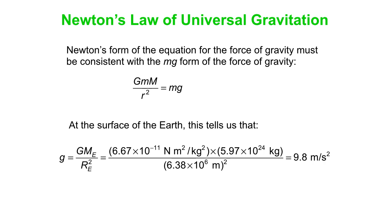Little g equals big G times the mass of the Earth divided by the radius of the Earth squared. If you did it on a different planet, you'd have the mass of that planet and that planet's radius squared. This is where the number 9.8 meters per second squared comes from — the mass and radius of the planet we're on, along with the value of the gravitational constant.